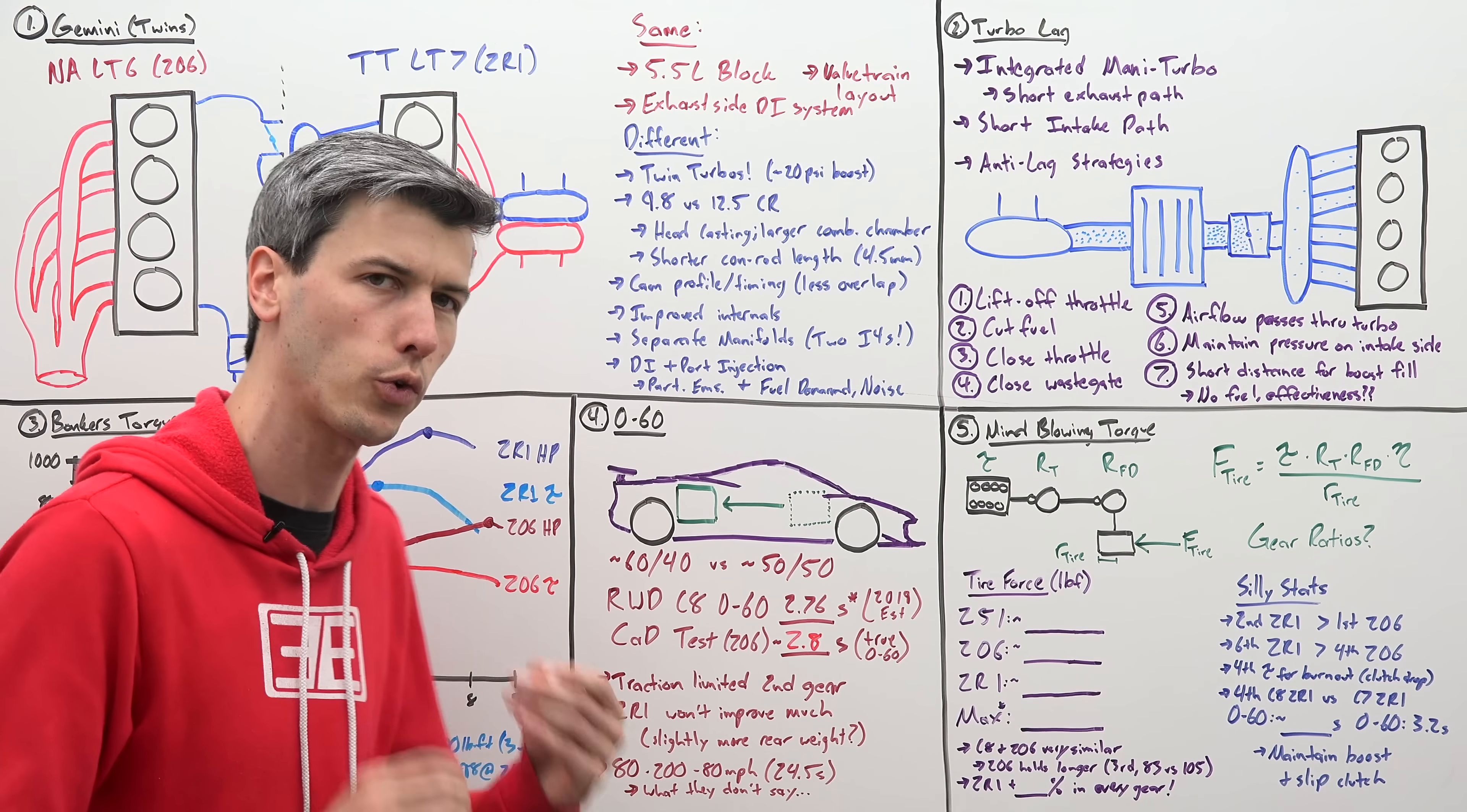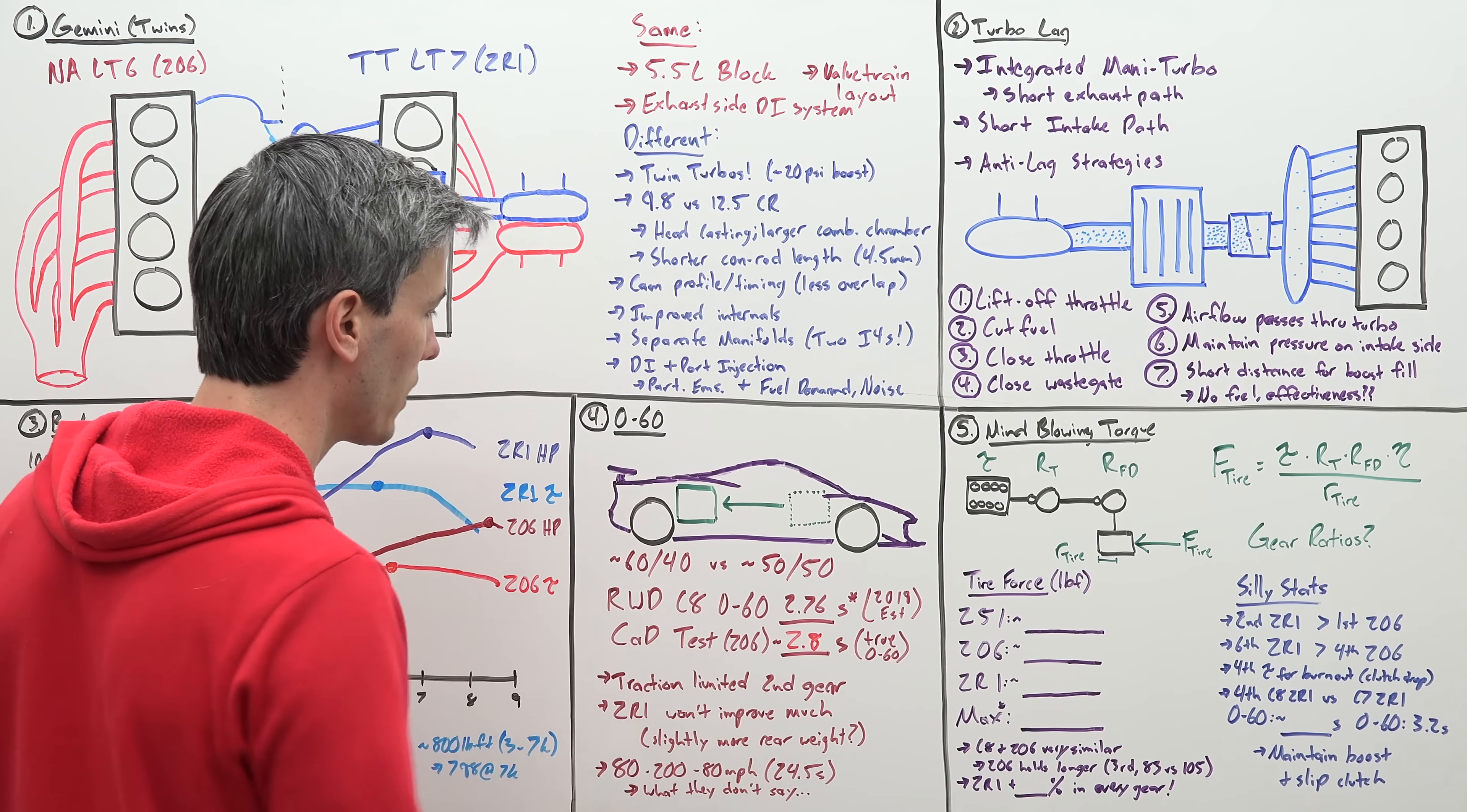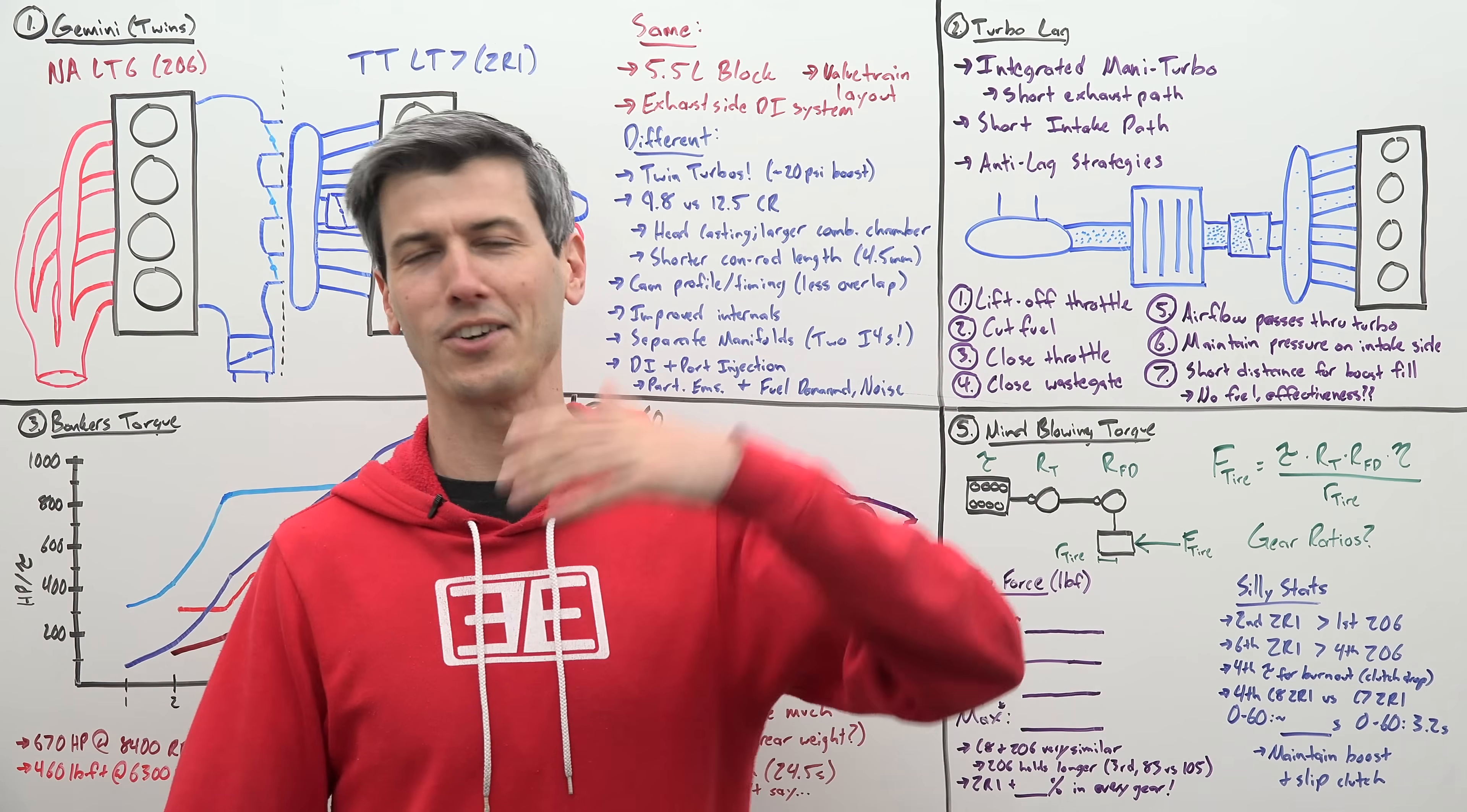So another thing that math says is that the Corvette is traction-limited in second gear, meaning if you gave the Z06 more power, it wouldn't accelerate to 60 any quicker because it's already at the limit of traction. So I don't really think we're gonna see a much better 0 to 60 time for the ZR1 unless it has significantly more weight in the rear or slightly better tires. But I think the tires are gonna be pretty similar, so really it's just gonna come down to: is there a lot more weight because of these added turbos on those rear wheels? If so, it could have a slightly better 0 to 60 time, but it won't be a huge difference.